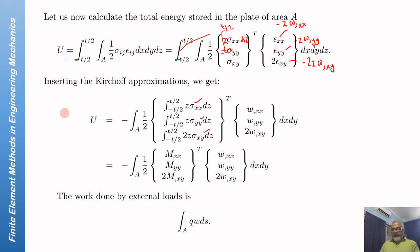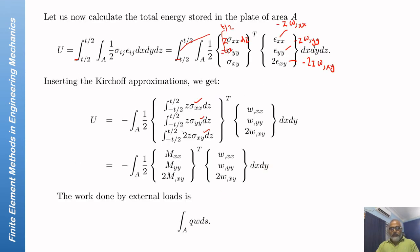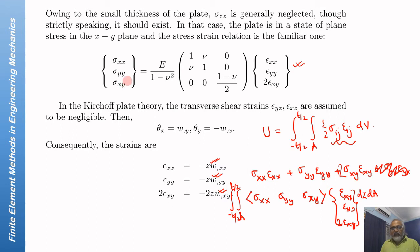This is the strain energy stored in the material. The work done by external loads is Q times W integrated over the area. We can now use the constitutive equation to reframe it in terms of MXX, MYY, and MXY. The constitutive equation integration — multiplying by Z and integrating from minus T/2 to T/2 — yields a Z-squared term, and the integration gives a constant factor in front.